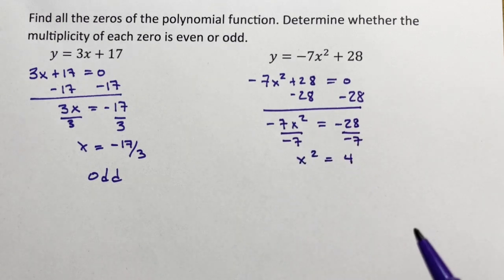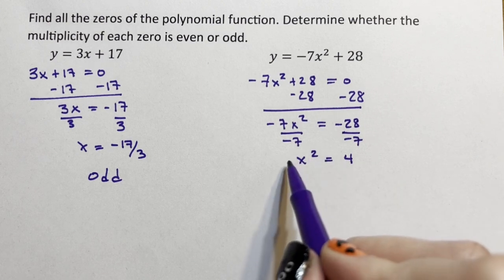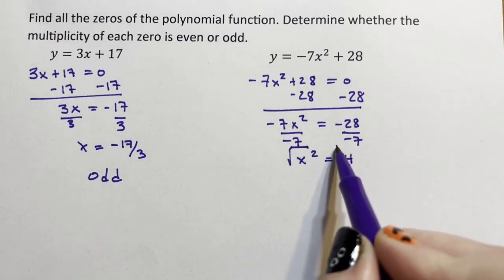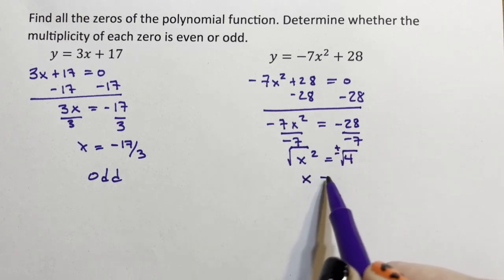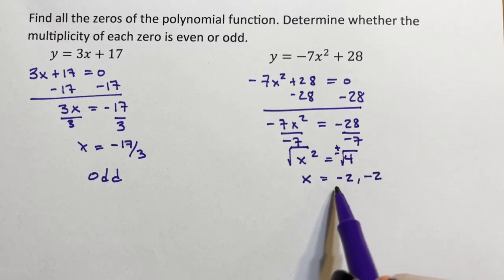Whenever you introduce a square root when solving, as a mathematician, you have to include the plus or minus to acknowledge the two zeros. So, this is negative 2 or positive 2. So, these are both odd.